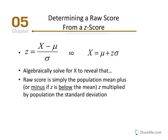We can also work backwards. Once we've determined the Z-score from the mean deviation divided by standard deviation, we can also identify the original X-value if we know the Z-score, the standard deviation, and the mean. We use algebra to isolate X in the equation.